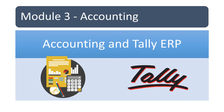Module 3: Accounting. Let's talk about what does accounting mean. Accounting is the process of recording financial transactions pertaining to a business. The accounting process includes summarizing, analyzing, and reporting these transactions to oversight agencies, regulators, and tax collection entities. The financial statements used in accounting are a concise summary of financial transactions over an accounting period, summarizing a company's operations, financial position, and cash flows.